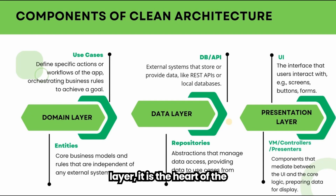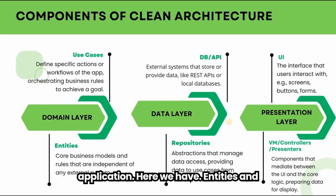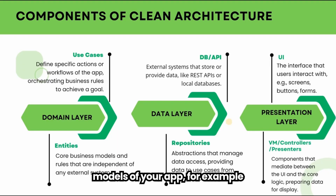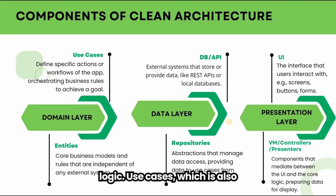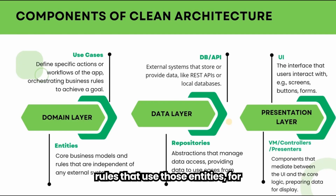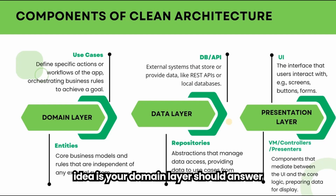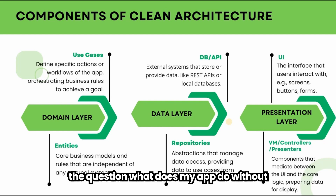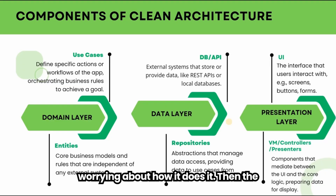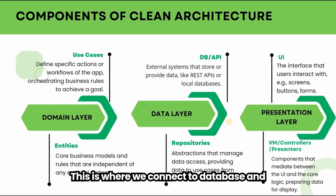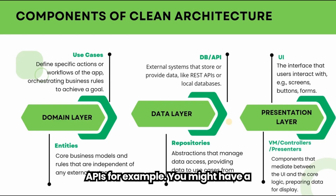Let's go a little deeper into the components inside each layer. In the domain layer — the heart of the application — we have entities and use cases. Entities are the core models of your app, for example a User, Product, or ToDo. They represent real things in your business logic. Use cases (also called interactors) are actions or rules that use those entities, for example: AddToDo, LoginUser use case, or FetchUserProfile use case. The domain layer should answer the question 'what does my app do?' without worrying about how it does it.